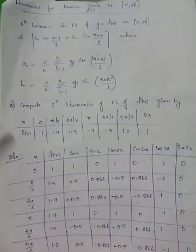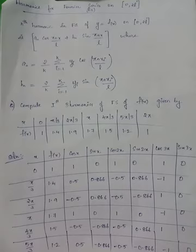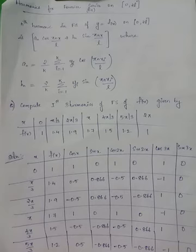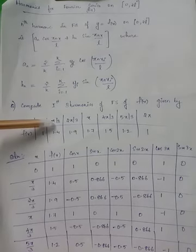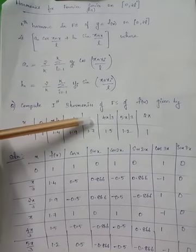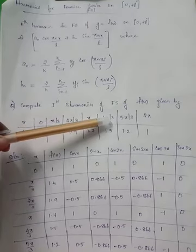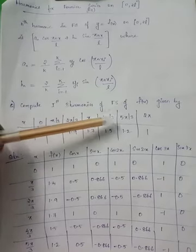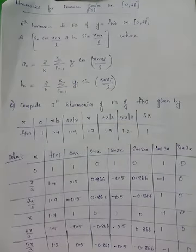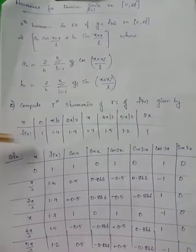Let's look at a problem to understand the concept: Compute the first 3 harmonics of a Fourier series of f(x). At various points of x we have output values f(x). The domain 0 to 2π is split into six equal sub-intervals: 0 to π/3, π/3 to 2π/3, 2π/3 to π, π to 4π/3, 4π/3 to 5π/3, and 5π/3 to 2π. So k = 6.